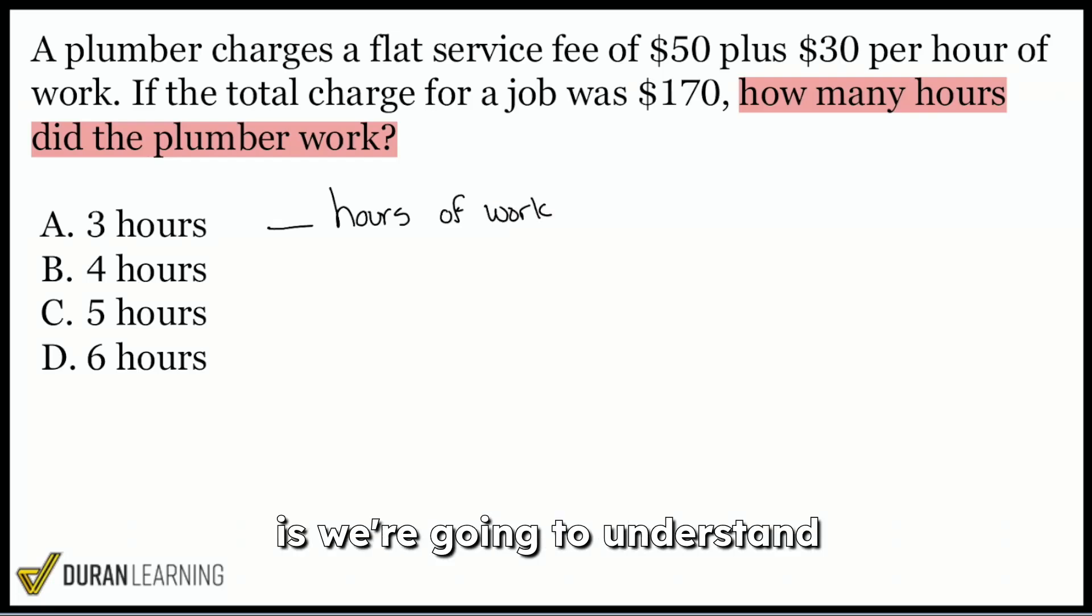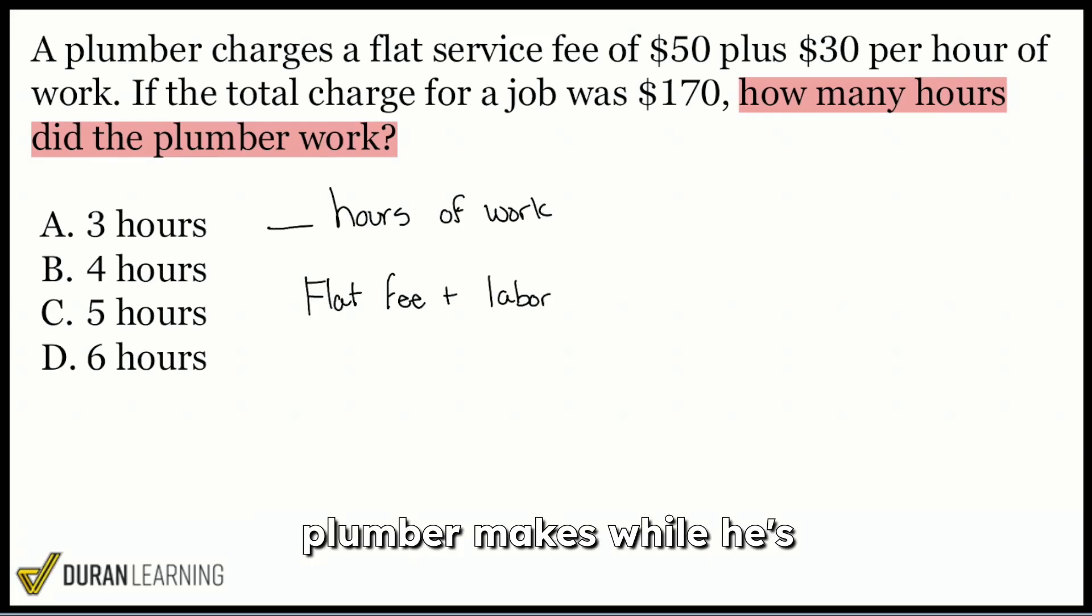Now, what we're going to do next is we're going to understand how to set this up. Because in setting this up, we see that we have the total charge for the job being $170. We have a flat fee of $50, and we're adding on $30 per hour of labor. So how do we get this all making sense? Well, we can set up an equation. We can say that the flat fee plus the labor, the amount of money that this plumber makes while he's actually working, that's going to equal the total charge.